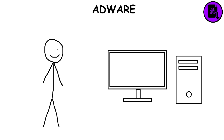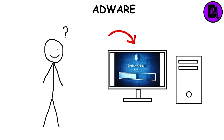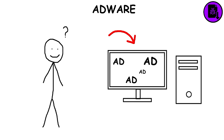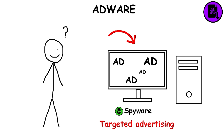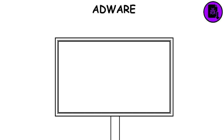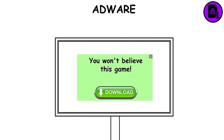Adware. This term is usually used to describe malware that installs itself on your system without your knowledge, often when downloading other software, and displays advertisements when the user browses the internet. Some adware also acts as spyware by collecting data to be sold or used for targeted advertising. The most recognizable ones open a pop-up in an unclosable window.